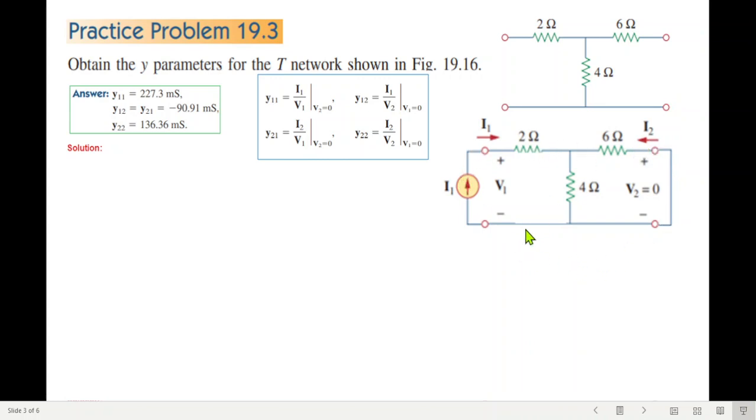These two currents are i1 and i2, and these are the voltages v1 and v2. Since this is a short circuit, v2 will be zero. Now if you see the circuit, this branch and this branch are in parallel, so we'll solve that. Six ohms and four ohms in parallel will give us 2.4 ohms.